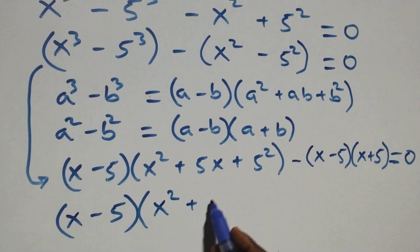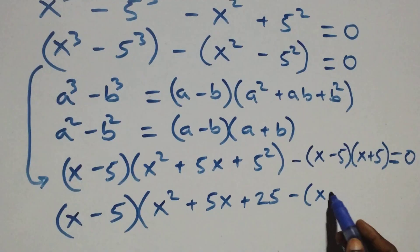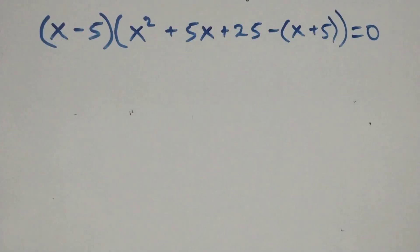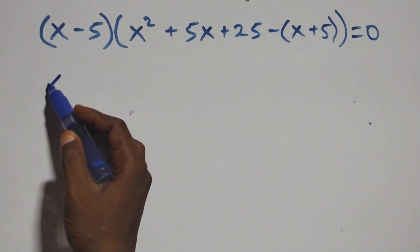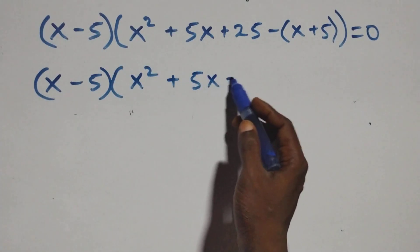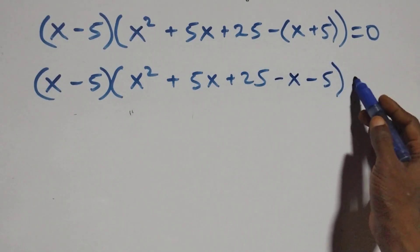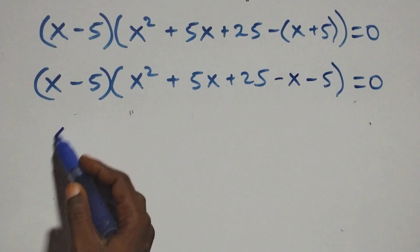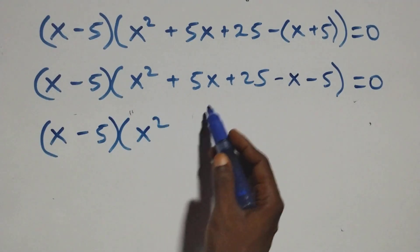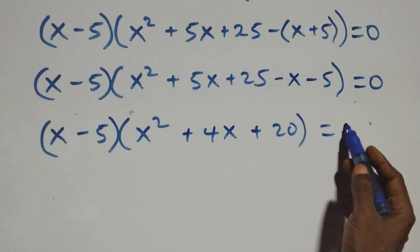We have (x minus 5) as a common factor. Factoring it out gives (x minus 5)[(x squared + 5x + 25) minus (x + 5)] equals 0. Opening the inner bracket: x squared plus 5x minus x plus 25 minus 5 equals x squared plus 4x plus 20. So we have (x minus 5)(x squared + 4x + 20) equals 0.